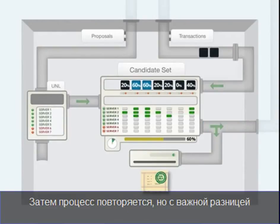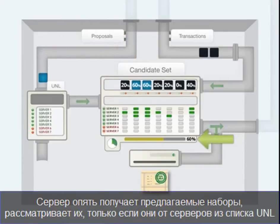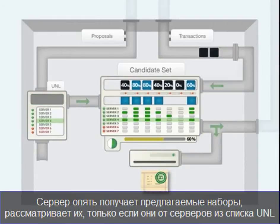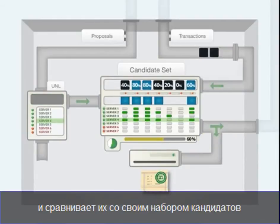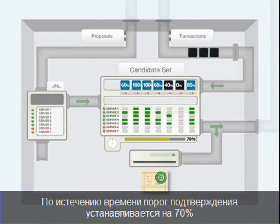The process now repeats, but with an important change: the approval rating requirement increases to 60%. Once again, the server receives incoming proposals, looks only at ones from servers on its UNL, and compares these proposals against the candidate set. Transactions with a 60% approval rating are packaged into a new proposal and sent out across the network. When the timer expires, the approval rating rises to 70%.